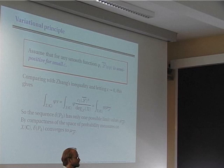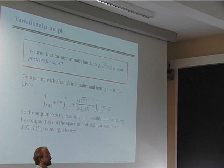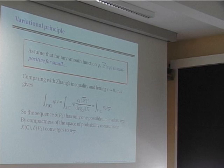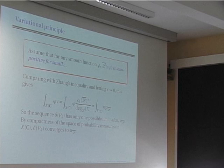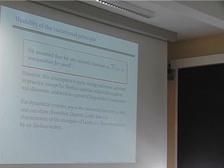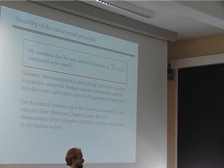Nevertheless, there is a necessary assumption: I needed to use Zhang's inequality for the line bundle L̄(εφ). For Zhang's inequality to hold, I need the line bundle L̄(εφ) to be semi-positive, at least for small enough ε. This is a very strong assumption. For abelian varieties it was satisfied: the (1,1)-form from the theory of Néron–Tate heights is exactly the Kähler form on the abelian variety attached to L̄, so it is strictly positive everywhere and remains positive under a small deformation by εφ.